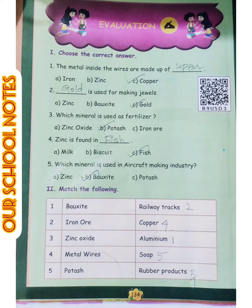Third one: Which mineral is used as fertilizer? The answer is option B: Potash. Fourth one: Zinc is found in — the answer is option C: Fish.